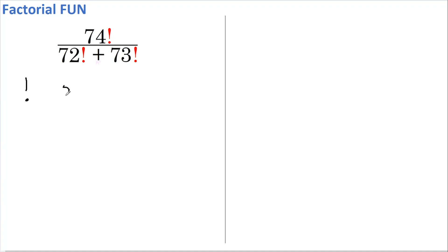Well, let's say we have 5 factorial. This means 5 times 4 times 3 times 2 times 1.